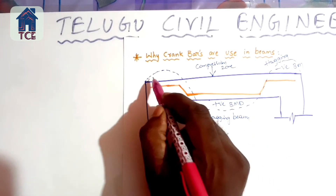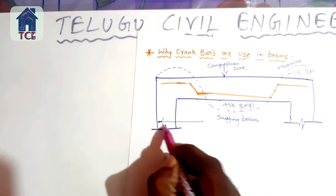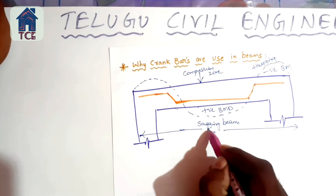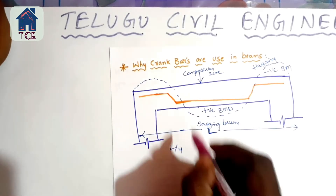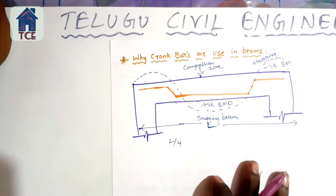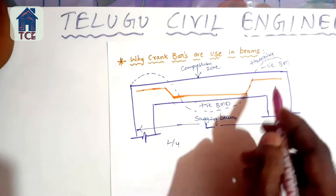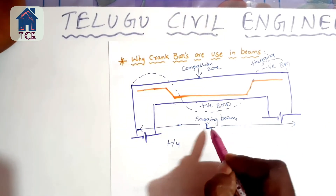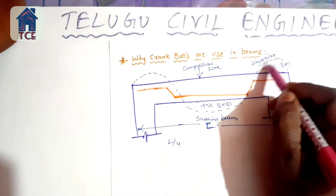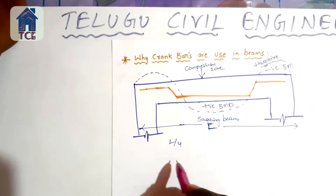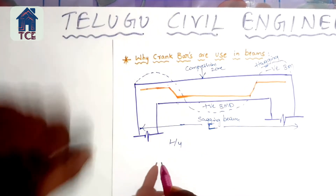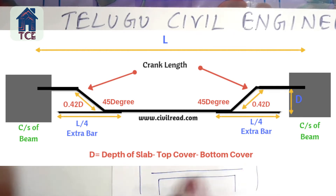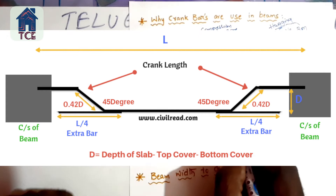This is the total length of the beam. The crank angle will be 74 degrees at one end and 45 degrees at the bend. This is the crank bar. The positive moment is sagging and the negative moment is hogging. The crank bar is used to handle the bending moment in the beam and to bring together the main bars.